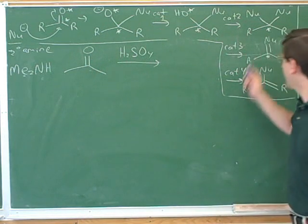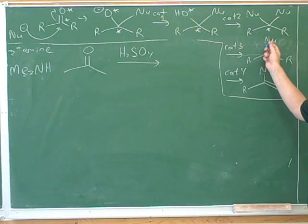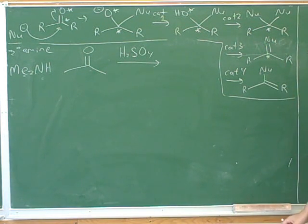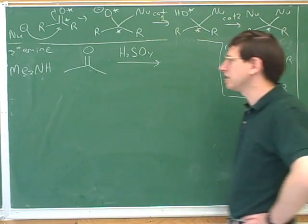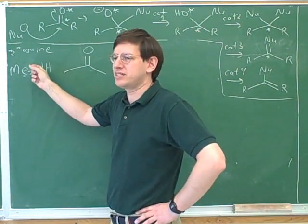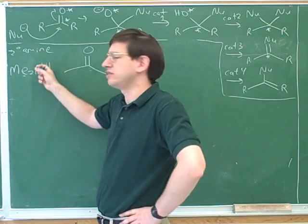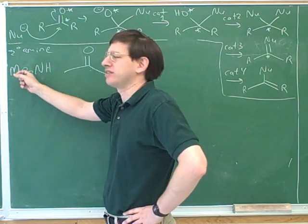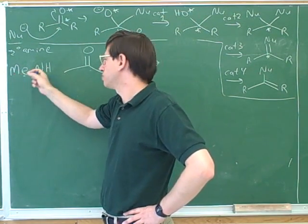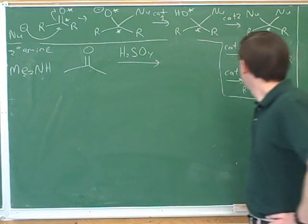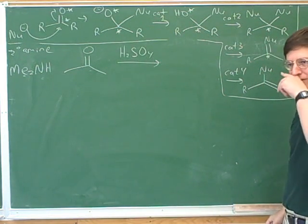Now this cannot do a Category 3 reaction. Why can't this do Category 3? Because it only has one proton. That's right. Good. So it can only attack once. It can't attack twice. It can only attack once because it can only deprotonate once. And it can't dealkylate. That almost never happens. So this is only going to be able to attack once. So we're not going to be able to be in Category 3.